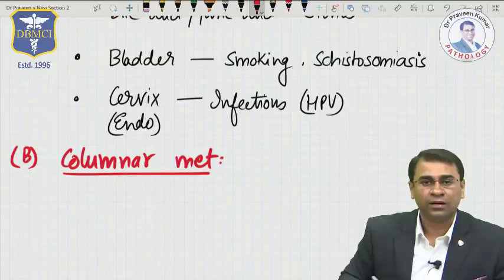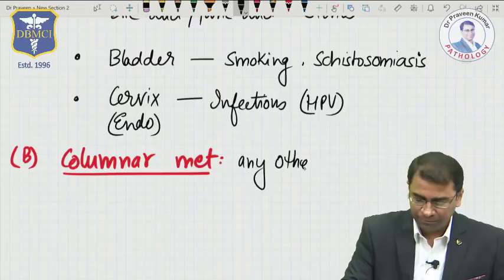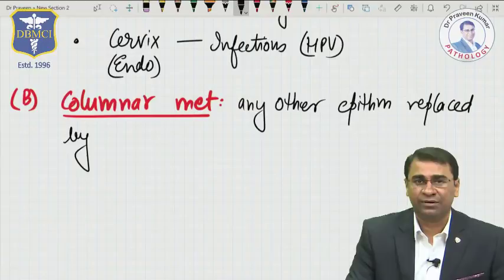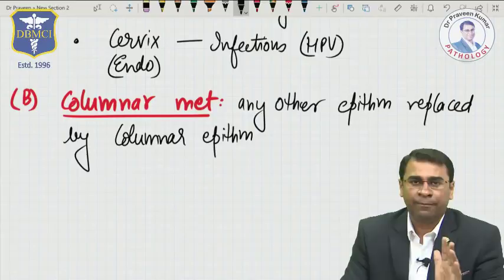Columnar Metaplasia. The one and only example of columnar metaplasia is the most famous Barrett's Esophagus. Any other epithelium replaced by columnar epithelium becomes columnar metaplasia.